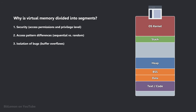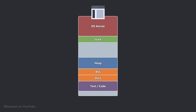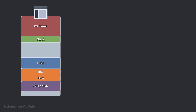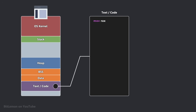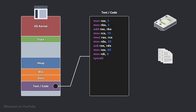Now let's dive into each of the memory regions. The text segment, also known as the code segment, contains the executable instructions of the program. It's typically loaded from the binary file, which contains the compiled code of the program, and is often marked as read-only to prevent the code from modifying itself.